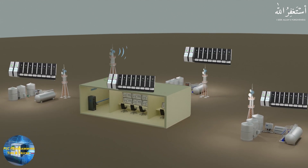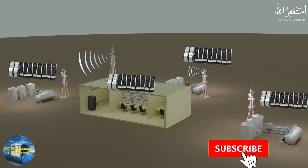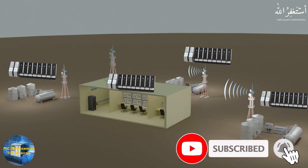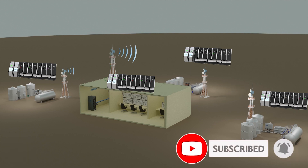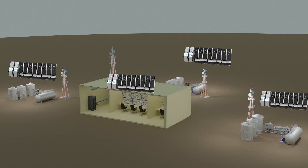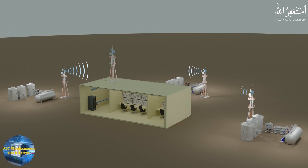DCS works by using multiple controllers that are distributed throughout the factory. Each controller is responsible for a specific part of the process. These controllers talk to each other and to a central supervisory system. This setup allows for better control and quicker responses to changes or problems.